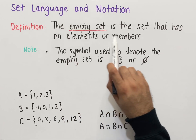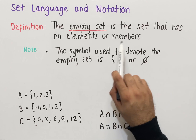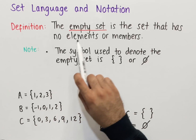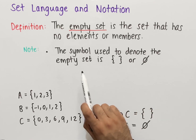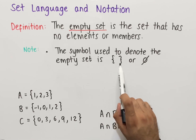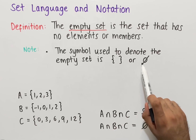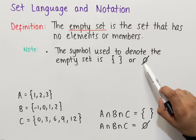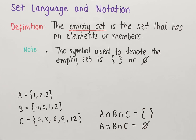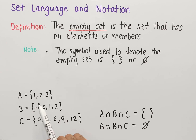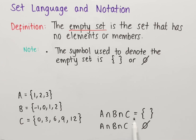The empty set is the set that has no elements or members. The symbol used to denote the empty set is either curly brackets with nothing inside, or a zero with a line through it. If we use the second symbol, the line must go through the zero in a specific direction to indicate the empty set. For example, the intersection of A, B, and C equaling the empty set can be denoted using either symbol.